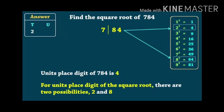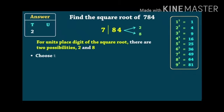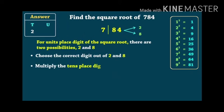Now, how to find out whether it will be 2 or 8? Multiply the tens place digit of the square root, that is 2, by its successor, that is 3. Now, 2 times 3 is 6.